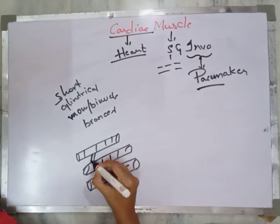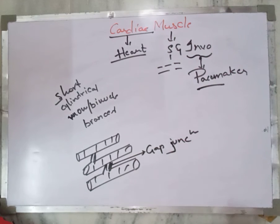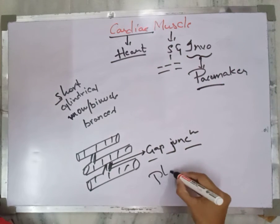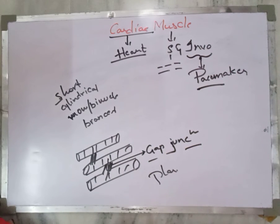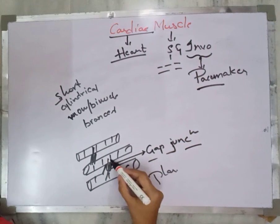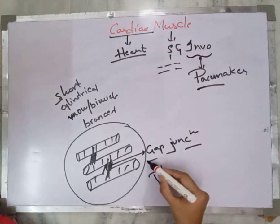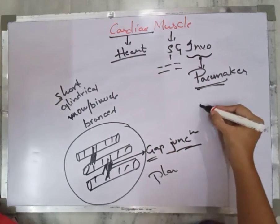Cardiac muscle fibers are mononucleate or binucleate and they are branched. The connections between the muscle fibers are called gap junctions, which are similar to the plasmodesmata of plant cells. These gap junctions are useful for sending signals from one cell to another — so when a cardiac muscle needs to contract, cells send signals from one to another until the entire tissue contracts.